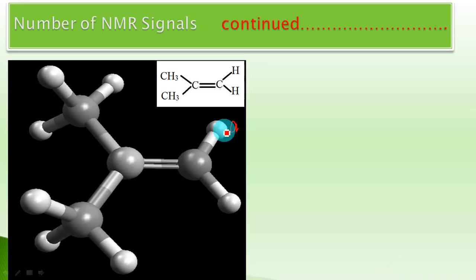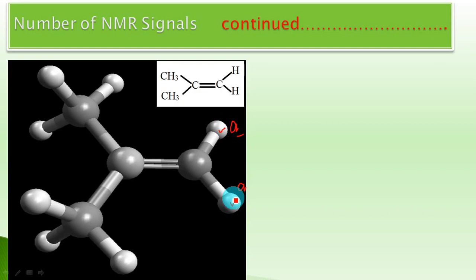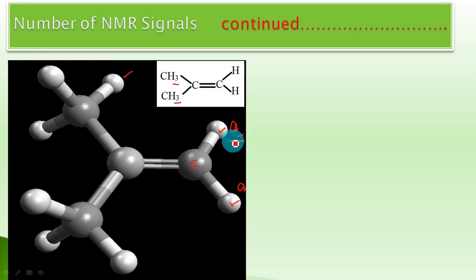If we take a particular hydrogen atom on the SP2 carbon and call its signal A, we find there is another hydrogen atom in the same electronic environment attached to the same SP2 carbon. These two hydrogen nuclei will give one signal, which we call the A signal.